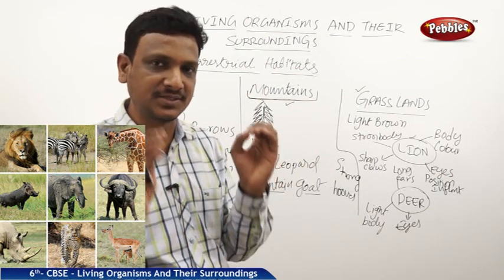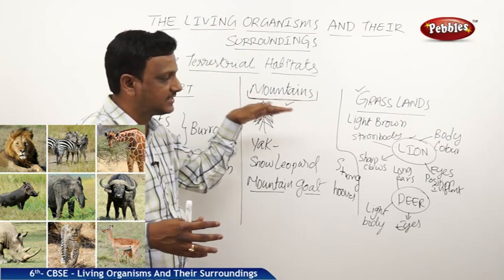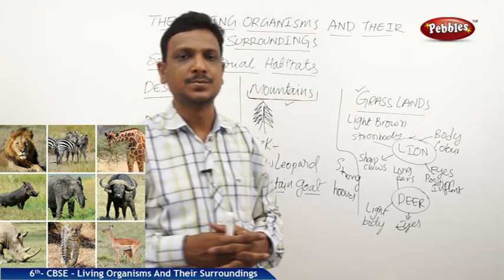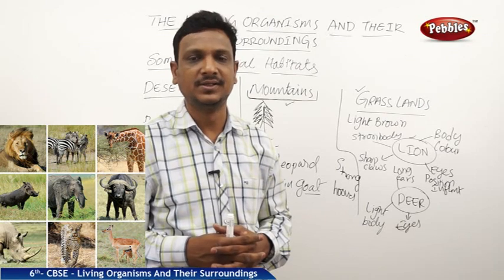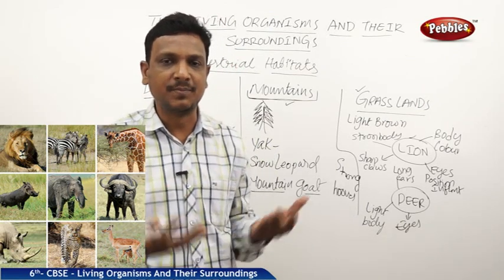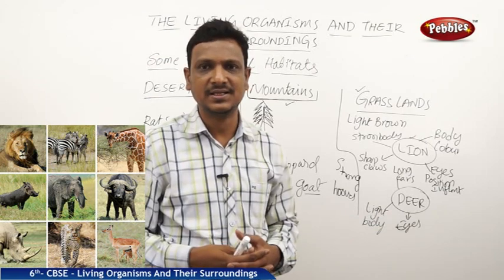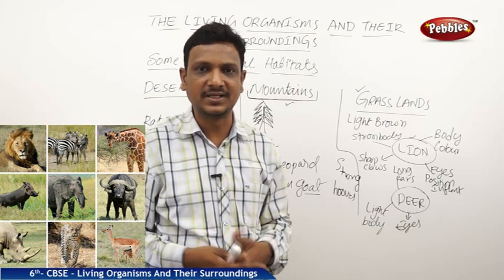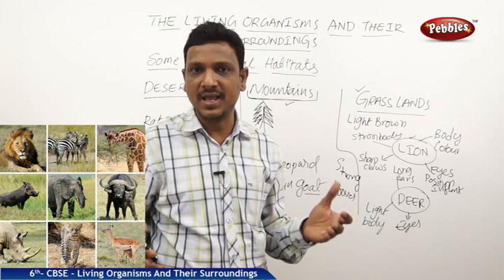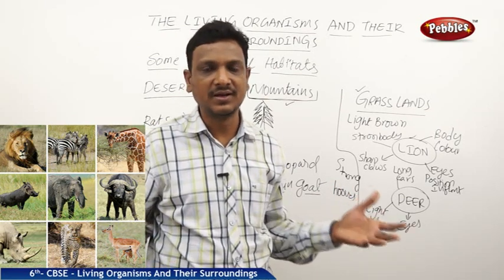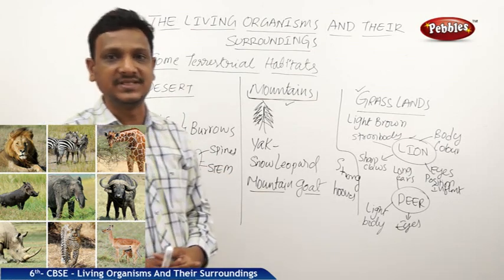All creatures have special features to adapt to live in a particular climate. We have seen the terrestrial habitats and observed different animals with different features. Having a special feature to live in a particular habitat is called adaptation. Animals develop these special features in a particular habitat over a very long period of time — it didn't happen in one or two days. After completing terrestrial habitats, let us move to the aquatic habitats.